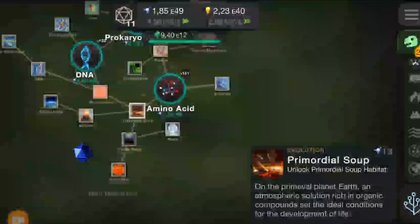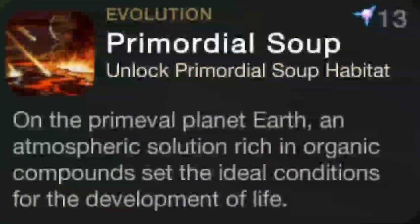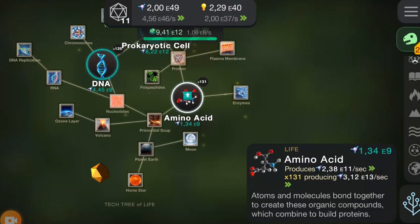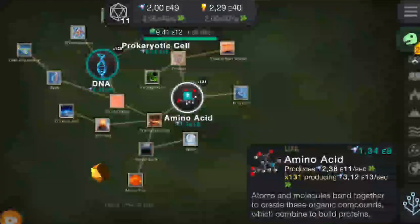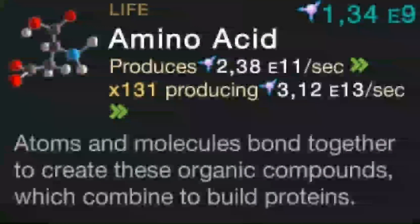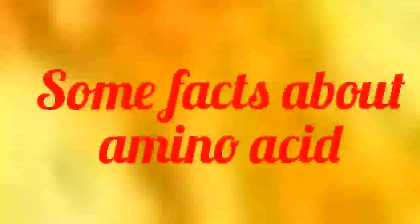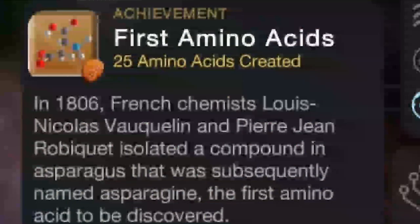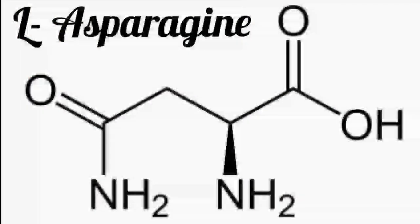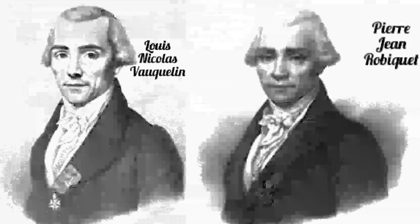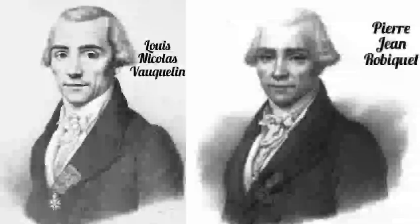On the primeval planet earth, an atmospheric solution rich in organic compounds set the ideal conditions for the development of life. Atoms and molecules bond together to create these organic compounds, which combine to build proteins. In 1806, French chemists Louis Nicolas Bachelin and Pierre-Gene Robiquet isolated a compound in asparagus that was subsequently named asparagine, the first amino acid to be discovered.